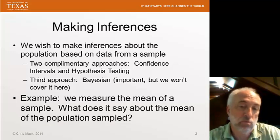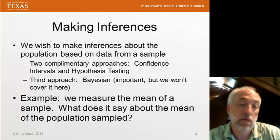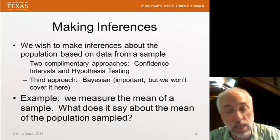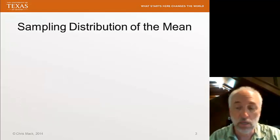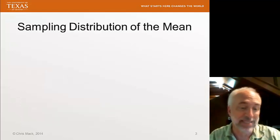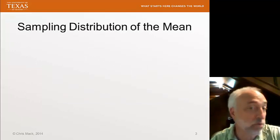Here's an example. We measure the mean of a sample, and we ask, what does this tell us about the mean of the population that we sampled? To answer that, we have to know something about the sampling distribution of the mean, which we've already discussed.